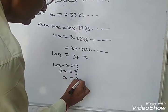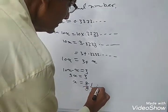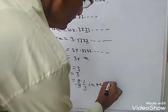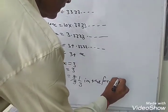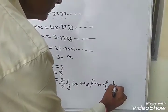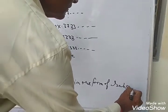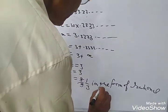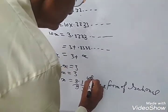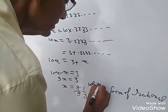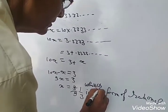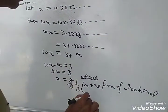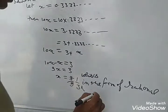So 10x minus x is equal to 3, meaning 9x equals 3, therefore x equals 3 by 9, that is 1 by 3. This is in the form of a rational number. Thank you.